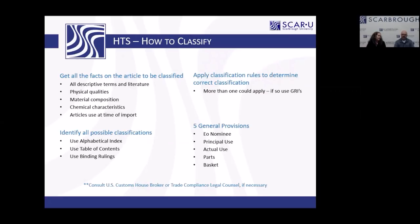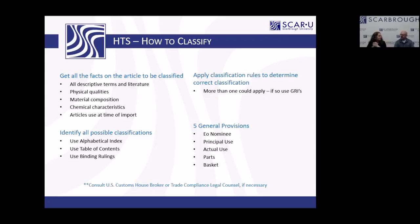Now we're going to get into how to classify. First you need to get all the facts about your product: descriptive terms, literature, qualities, what it's made of, chemical characteristics, and the use of your product at the time of import. Then identify all possible classifications using the alphabetical index, table of contents, and finding rulings — which we use quite frequently. Apply classification rules and if more than one classification could apply, go to the general rules of interpretation.